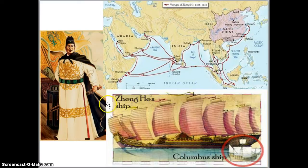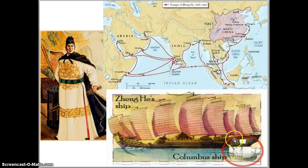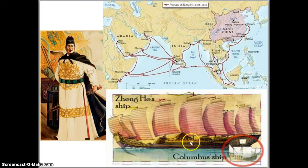Here is Zheng He's ship — look at this ginormous boat, it is huge. And here it is compared to Christopher Columbus' ships: the Niña, the Pinta, and the Santa María. It is very small. Columbus had a very small ship compared to Zheng He's treasure junk.